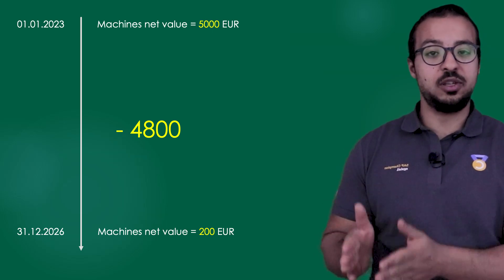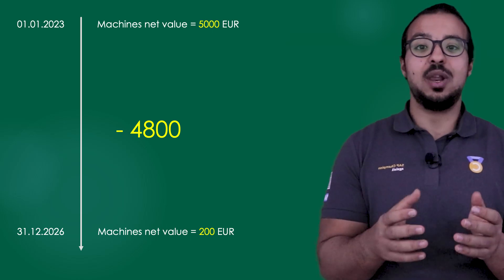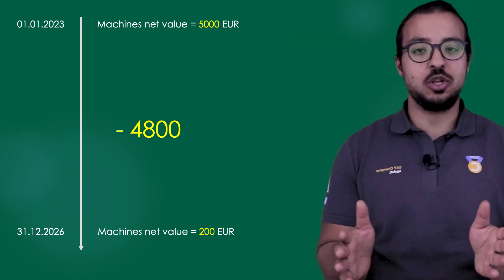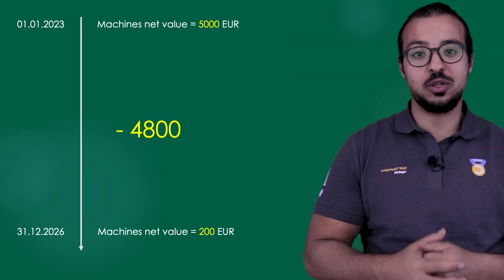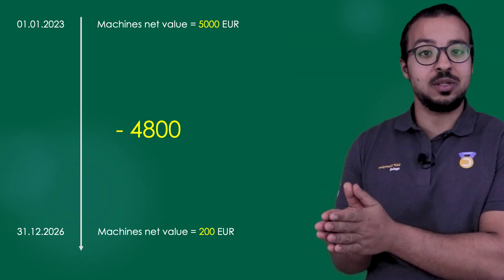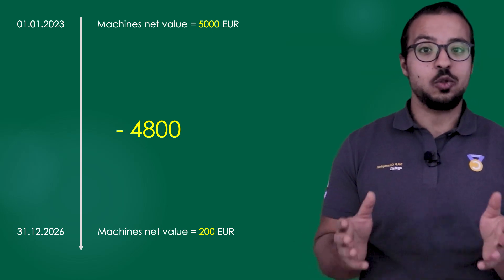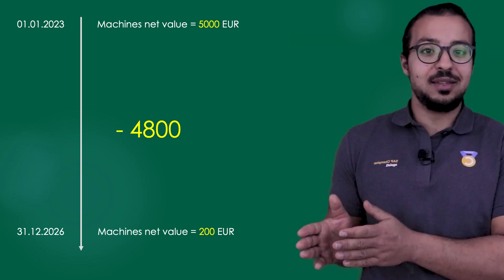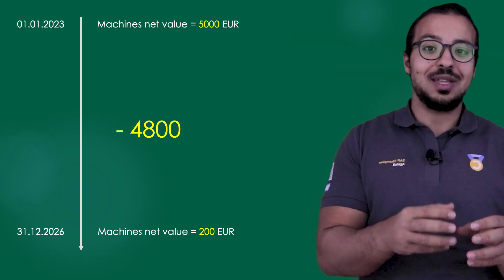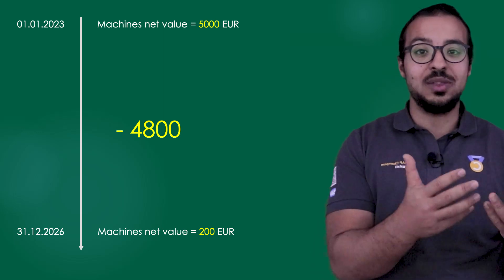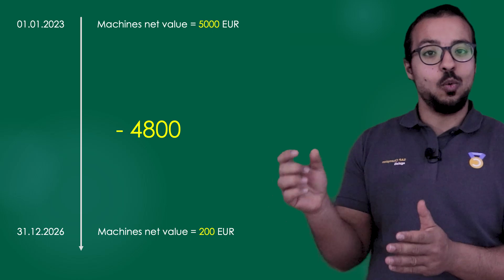At the end of the useful life — 31st of December 2027 — instead of having a value of 5,000 in the machines on our balance sheet, we will have a value of only 200. If we post no depreciation at all, then throughout the 4 years our balance sheet always shows a net fixed asset value of 5,000 euros, and then at 31st of December 2027 we have to post a loss of 4,800 — the total depreciation — all hitting one period. This doesn't match financial standards, which say that whenever we use something to generate value, we must post the expenses in the same period we use the asset.